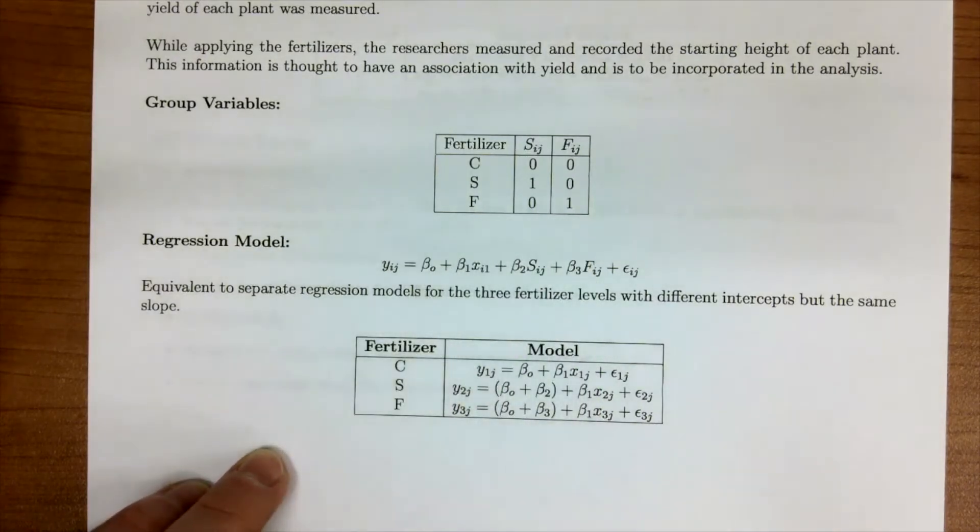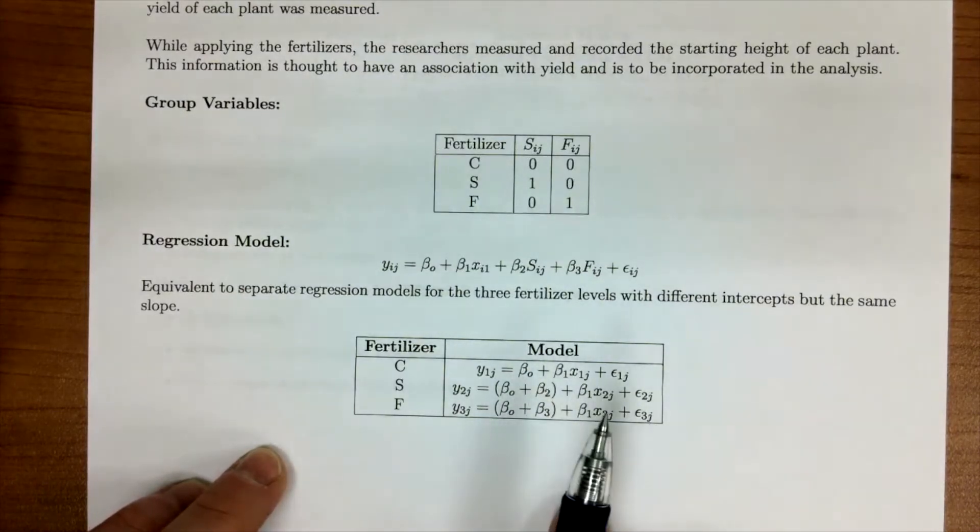And so when I was saying that C was a reference group, we can notice that our beta 2 and beta 3 are either going to be added or subtracted. It depends on the sign of our beta 2 and beta 3. So these two variables are kind of being referenced back. This is kind of our baseline in a sense.